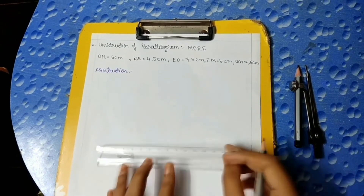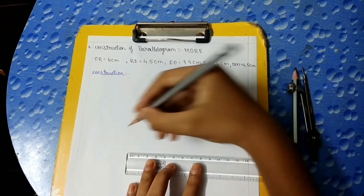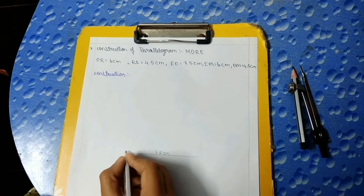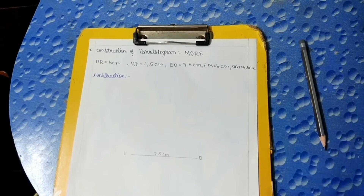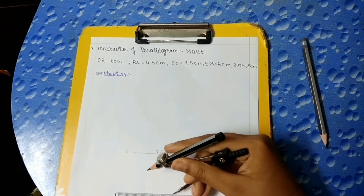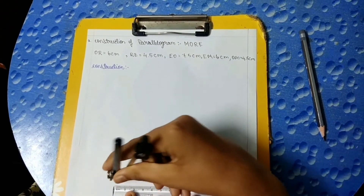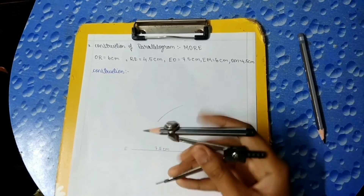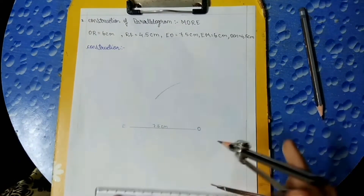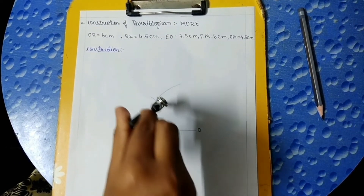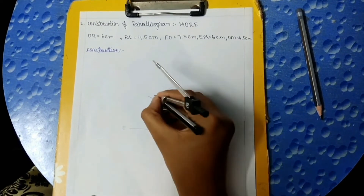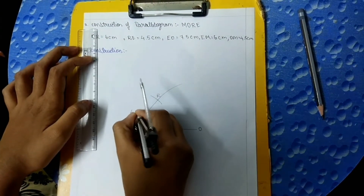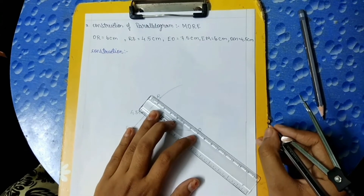Now let's construct the parallelogram. First, we should draw a baseline of 7.5 cm and name it as E and O. With the help of the compass, we should take 6 cm and keep the compass on point O and mark an arc. Then take 4.5 cm, keep it on point E and draw an arc. Now this point is known as R. We should draw a line from R to E of 4.5 cm and a line from R to O of 6 cm.